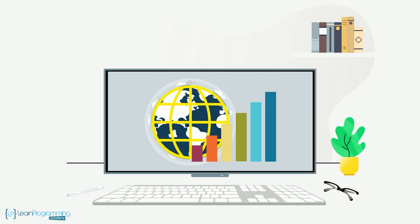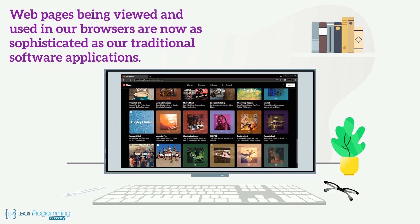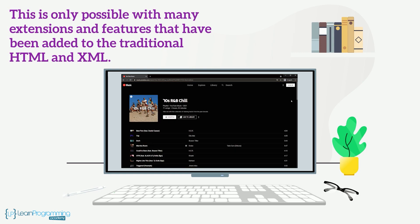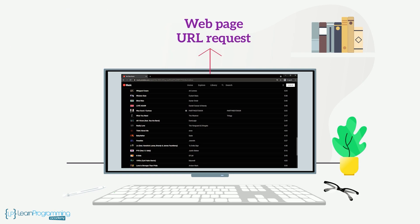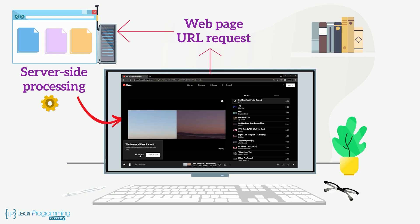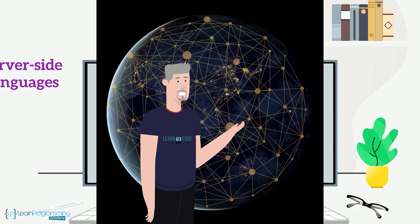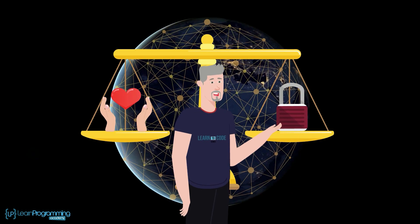Lastly, the web has made huge advances over its history. Web pages being viewed and used in our browsers are now as sophisticated as our traditional software applications. This is only possible with the many extensions and features that have been added to traditional HTML and XML. When a web page URL request is made from your browser, the web server does some server-side processing before sending the response back to the browser. A few of the server-side languages include Java Server Pages, JSP, Active Server Pages, ASP, and PHP. Evolution is never ending when it comes to computing technologies, and as new capabilities emerge, consideration must be given to both ethical and security issues that arise with them.